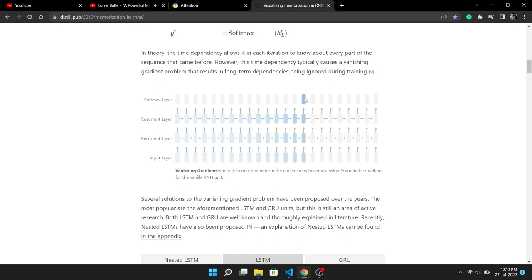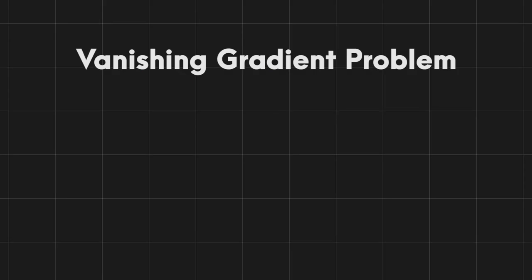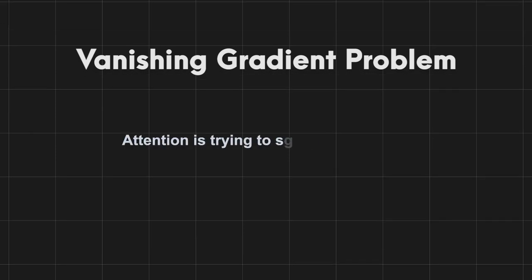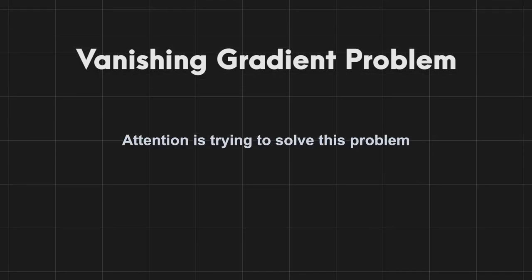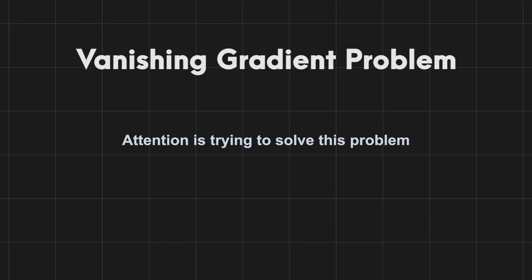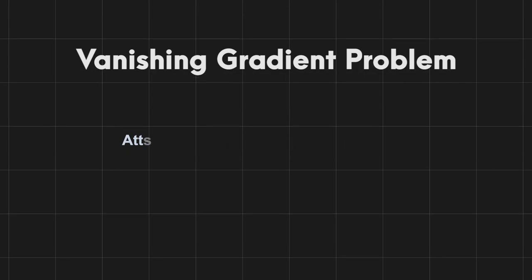An article on memorization shows this problem with animation: as we move one token forward at a time, the RNN has a good grasp of three to four words behind it, but words further out are completely blank — as if they never existed. This is referred to as the vanishing gradient problem, and attention is attempting to solve it. As the video progresses, you'll see how elegantly attention addresses this.